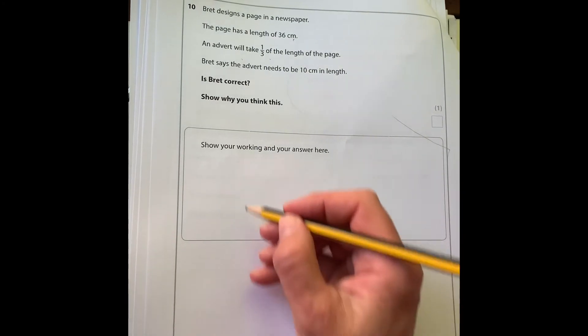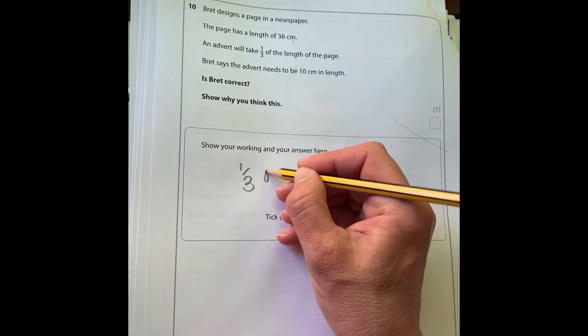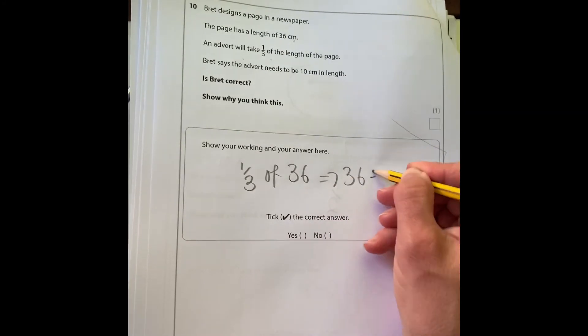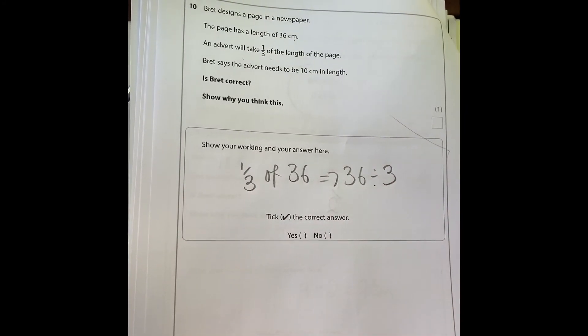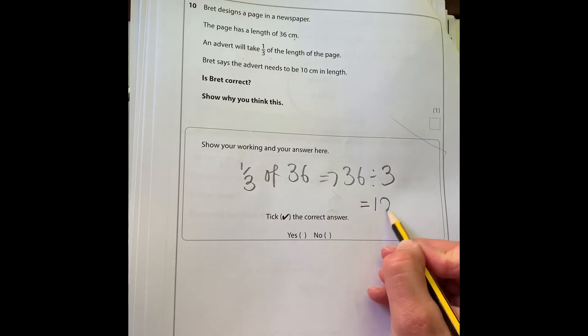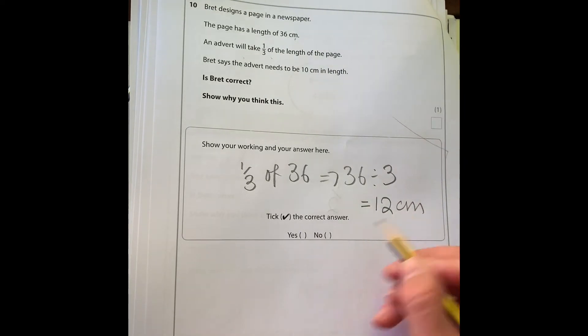An advert takes a third of 36, so to work out a third of 36 we do 36 divided by three. It is a calculator paper, so if you don't know your tables then we can work that out and we get 12. So again, Brett is wrong.